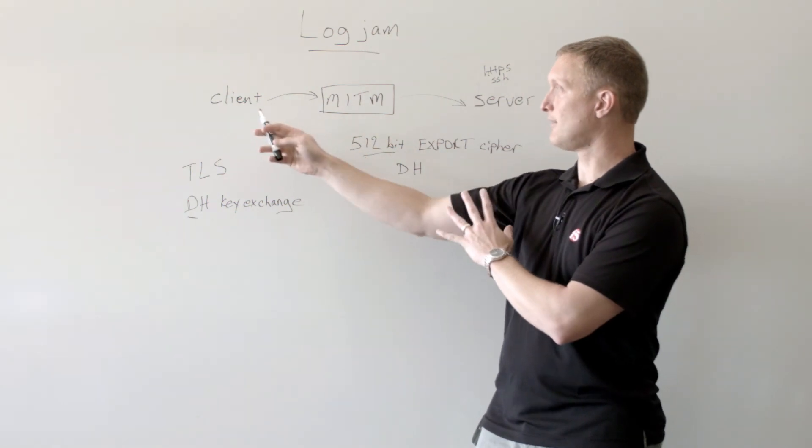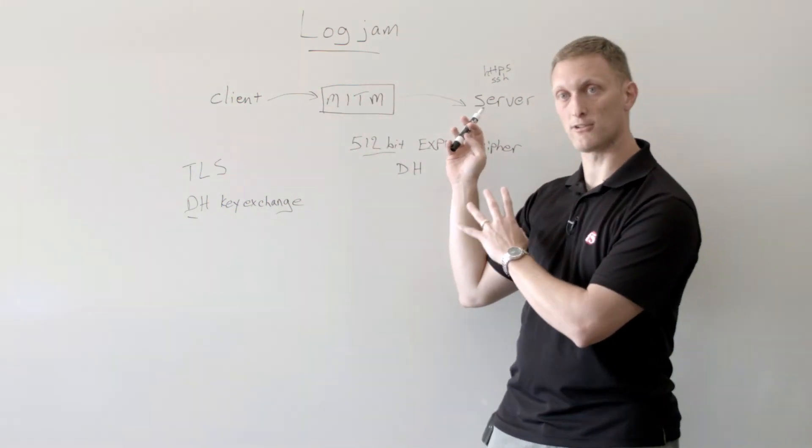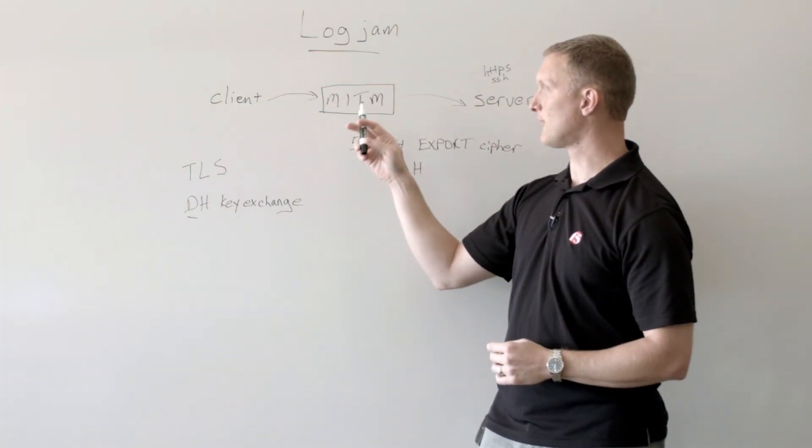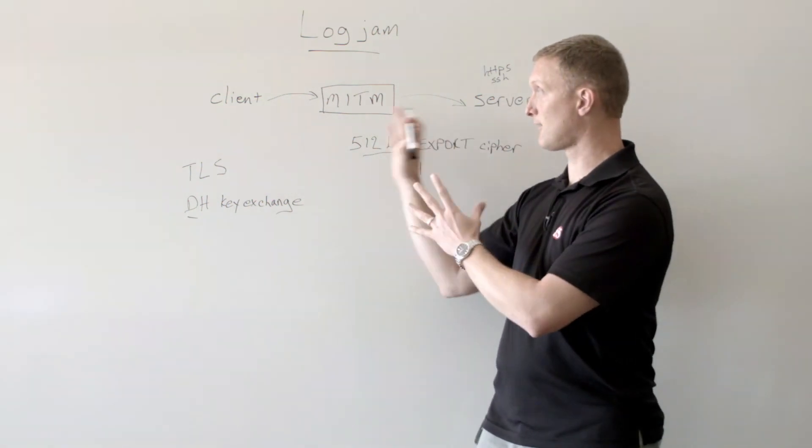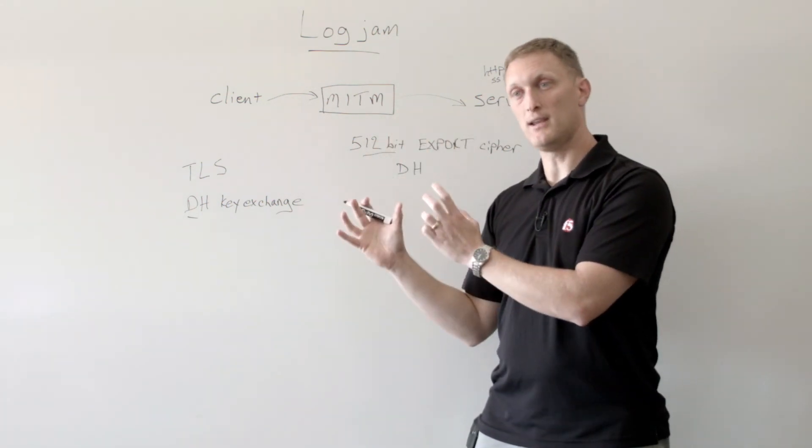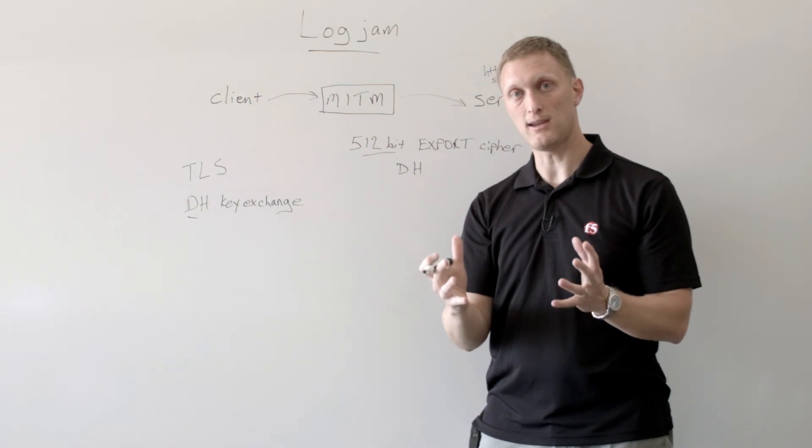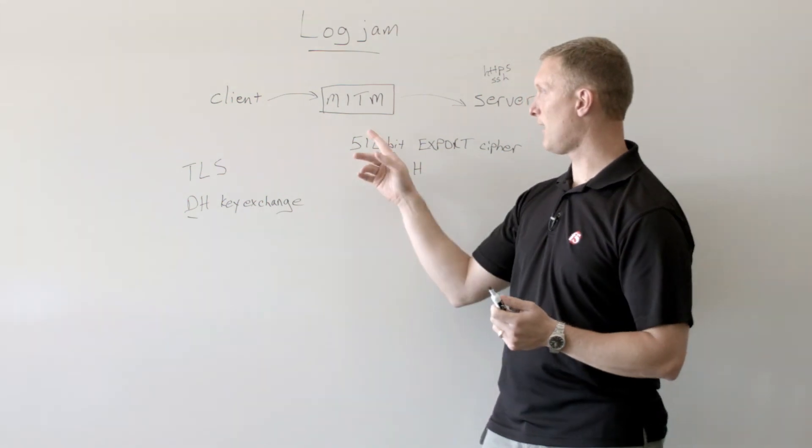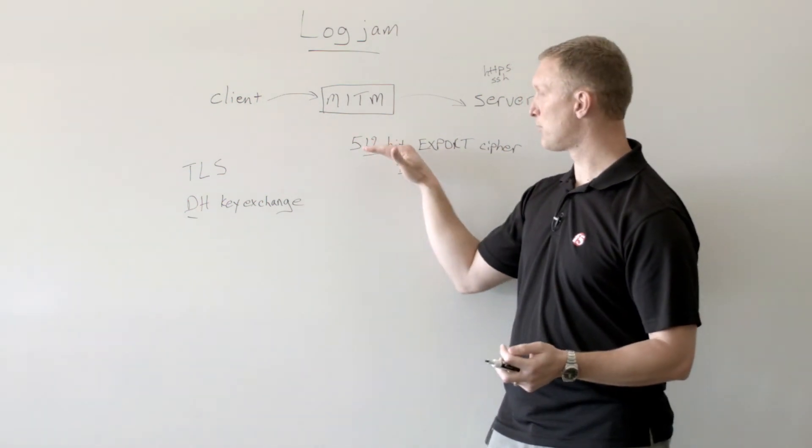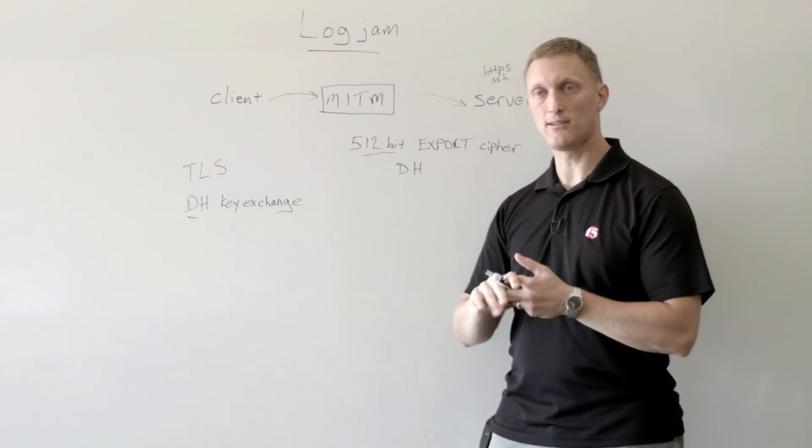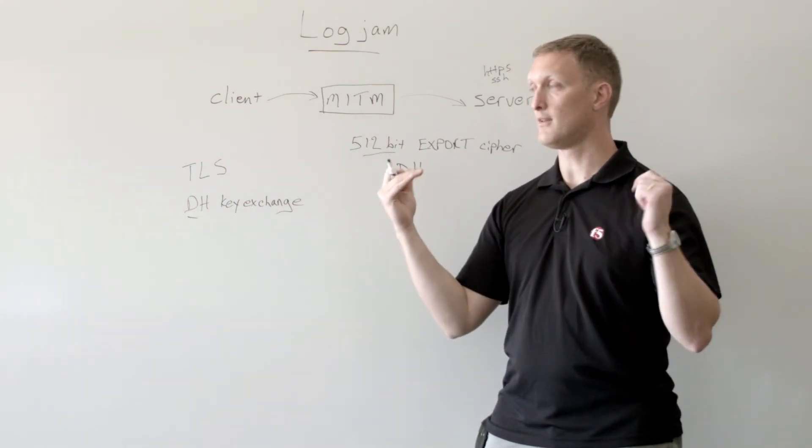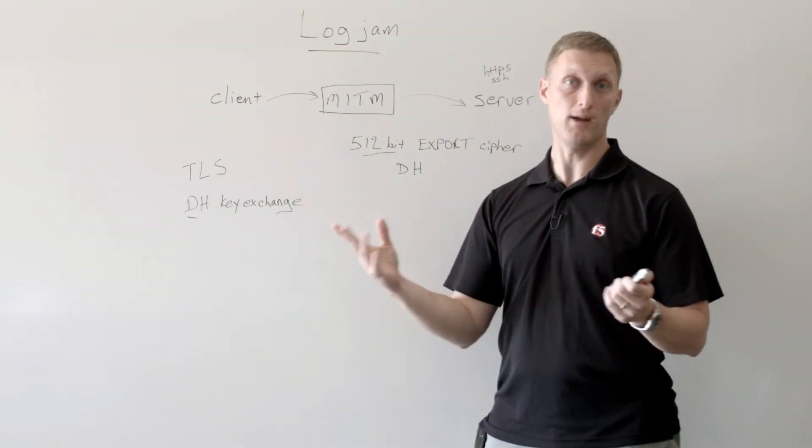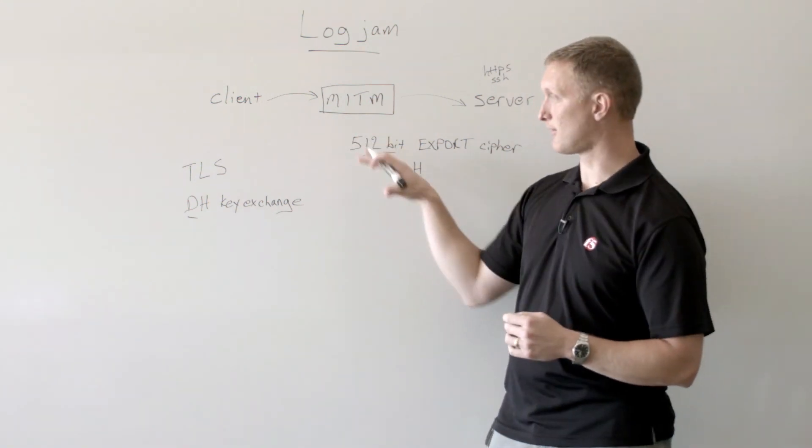The interesting thing about this is as the client requests the secure connection with the server, the way that the logjam stuff works or the way that all this works is this man in the middle would have to be able to crack this in real time. But again, if you go back to the fact that he's already pre-computed a lot of these keys, then he's able to do that in real time. And you may ask yourself, who in the world has time or maybe the computing power to pre-compute all of these keys? And the answer is there's some well-funded governments or large organizations that do have that power. And so it is possible to do this kind of stuff.